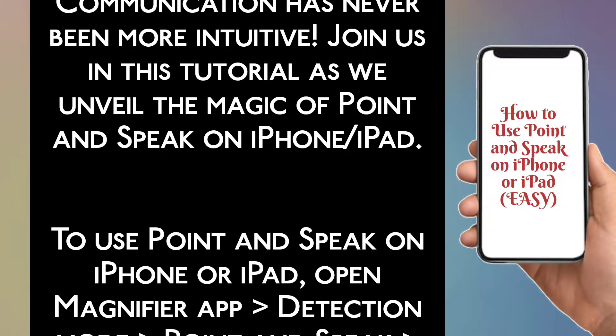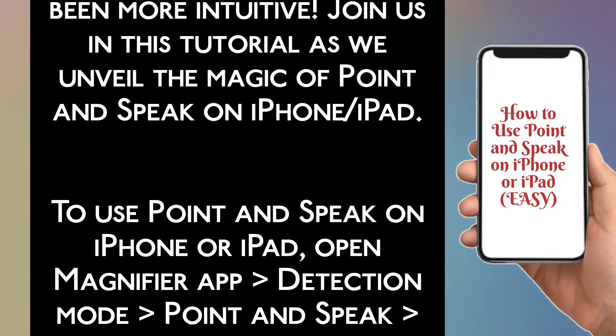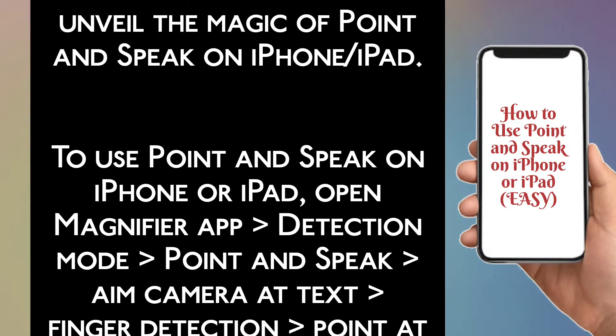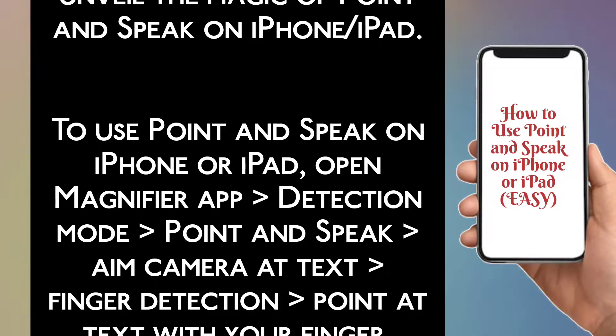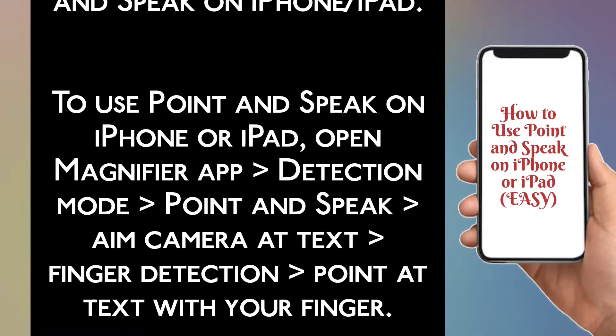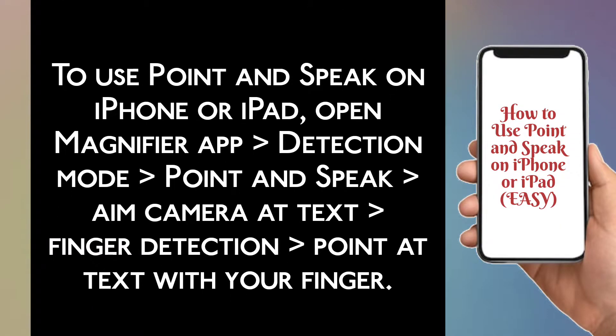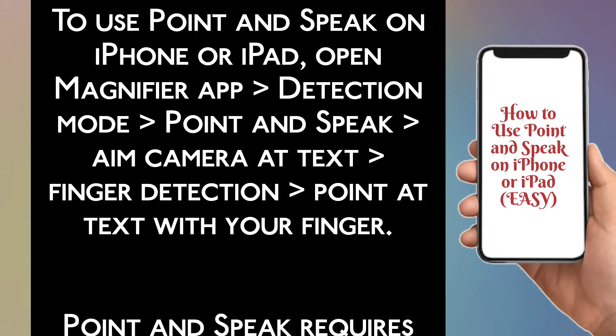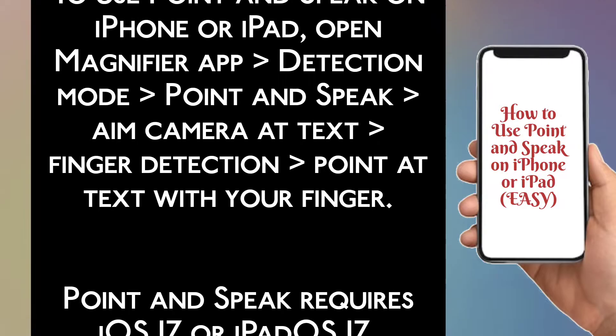open the Magnifier app, go to Detection Mode, then Point and Speak, then aim the camera at text, then Finger Detection, then point at text with your finger.